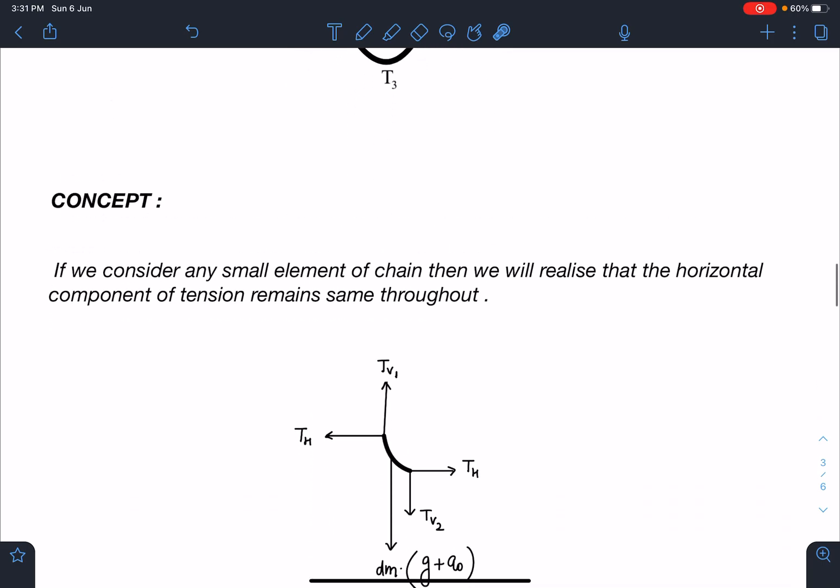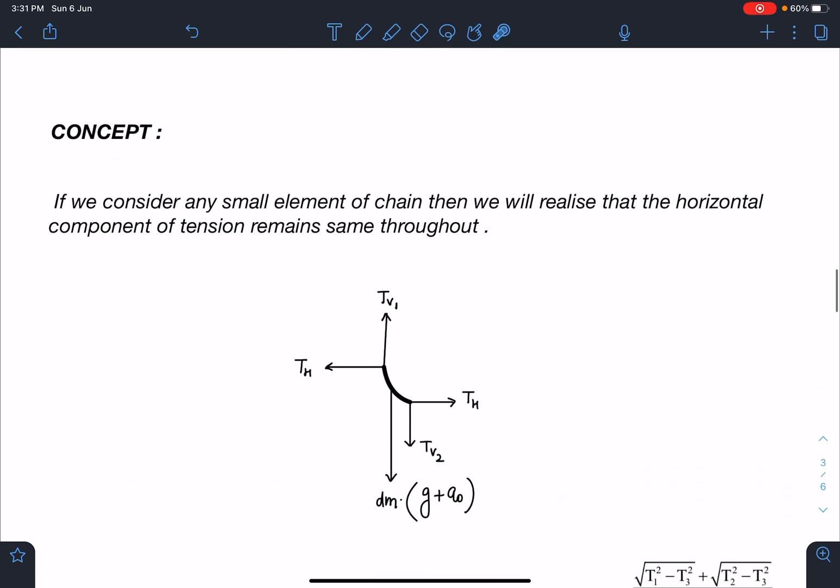Let's discuss this problem. Concept-wise, if we consider any small element of this chain, then we will realize that the horizontal component of tension remains same throughout. Forces must be balanced in the frame of the chain - this is its effective weight, or you can say dm(g + a₀) with pseudo force combined. The vertical component of tension here and here must balance this. The horizontal component of tension is going to be the same because the particle is not accelerating in horizontal direction. Sometimes this info will help you in solving tricky problems of chains.